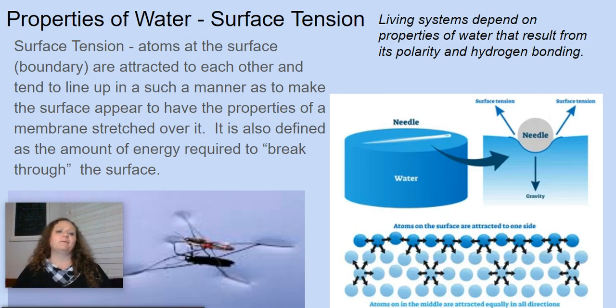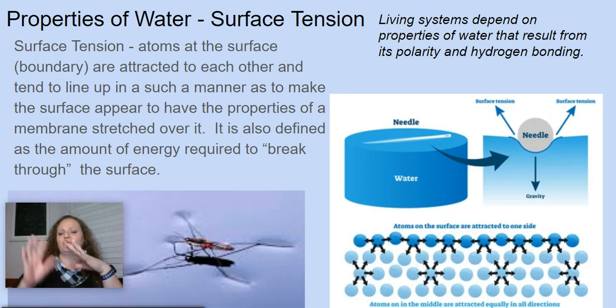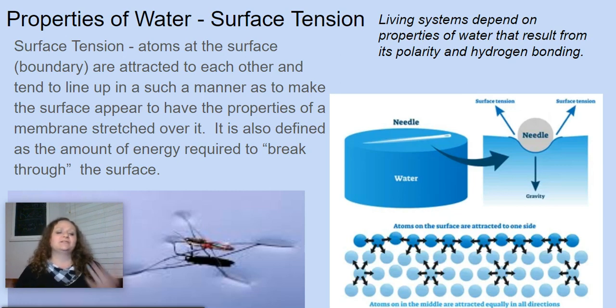So the first property we're going to talk about is actually surface tension. The way the molecules line up at that boundary between the water and the air almost forms like a membrane. They actually form some nice tight bonds there and it really makes the surface of water feel like a type of membrane has been stretched over it. You might also see surface tension defined as the amount of energy required to break through the surface, which is also an absolutely acceptable definition.